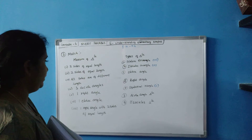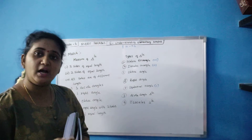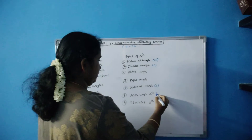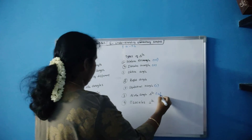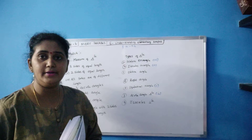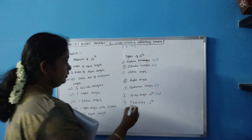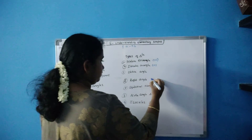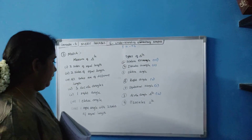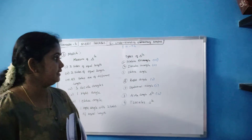Next one: three acute angles — they themselves say acute — so it is an acute angle triangle. That is number four. Then one right angle — right angle is nothing but 90 degrees — that is a right angle triangle. That is number five. Then one obtuse angle — one obtuse angle is nothing but an obtuse angle triangle.